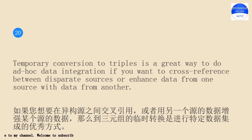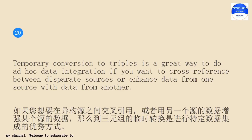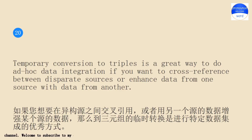Temporary conversion to triples is a great way to do ad hoc data integration if you want to cross-reference between disparate sources or enhance data from one source with data from another.